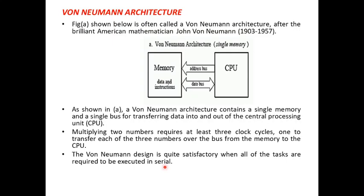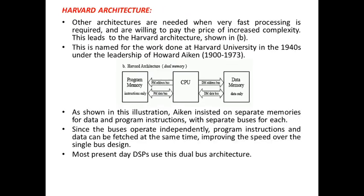However, in practice we do not go for serial execution of tasks; we go for parallel execution so that data can be processed in parallel. Hence, we use an architecture called Harvard architecture, which is needed when very fast processing is required and we are willing to pay the price for increased complexity. This work was done at Harvard University in the 1940s under the leadership of Howard Aiken, who developed an architecture with separate memories for instructions — called program memory — and separate memory for data, called data memory.